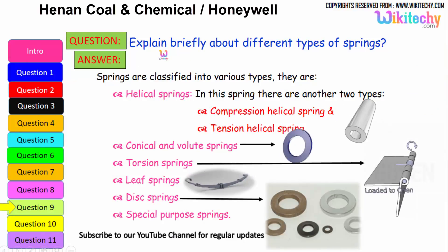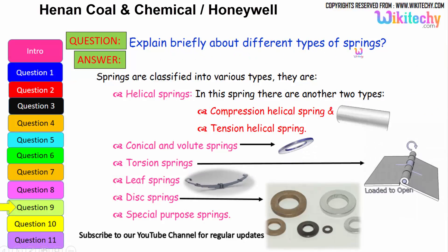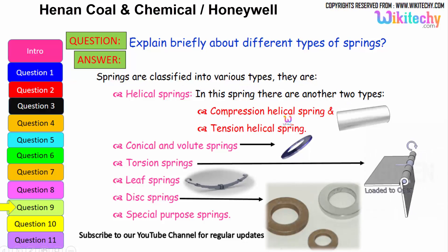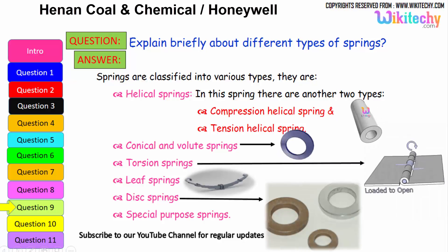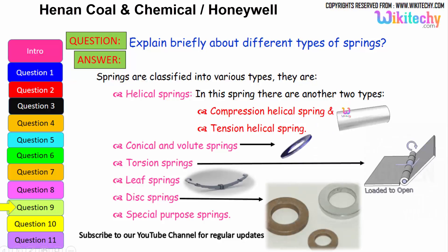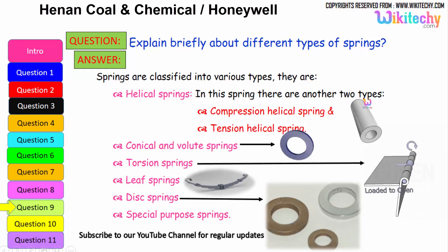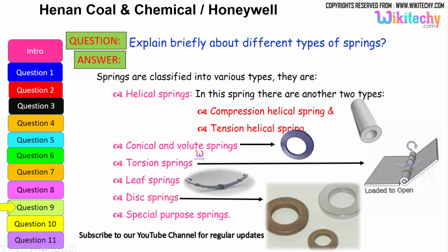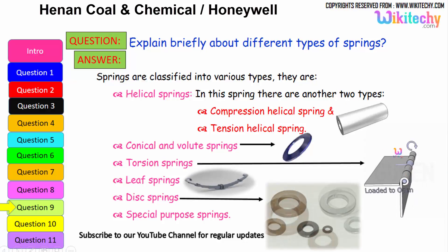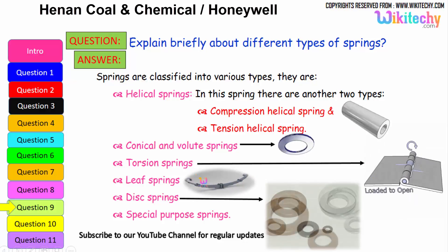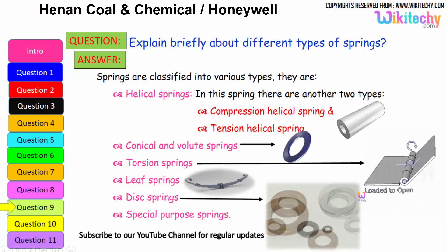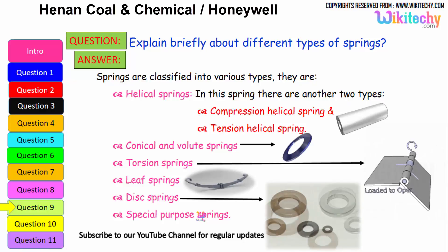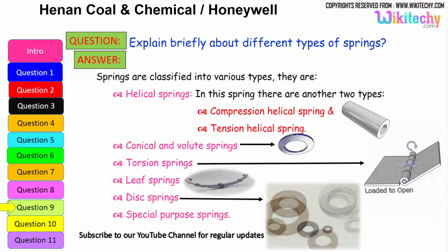Now let us briefly look at the different types of springs. Springs are classified into various types: the first is helical springs, which are further divided into compression helical springs and tension helical springs. The next is conical volume springs, followed by torsion springs, leaf springs, and disc springs. There are also special purpose springs. These are all the different types of springs available.